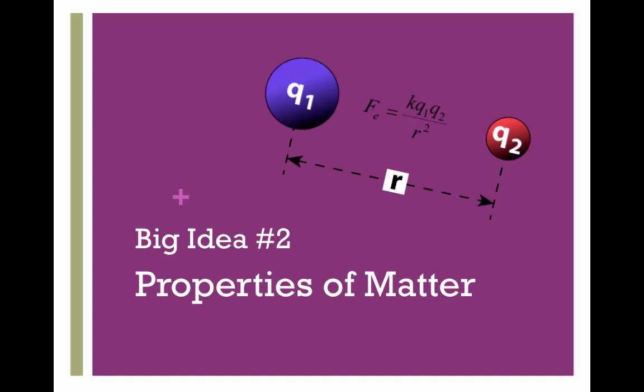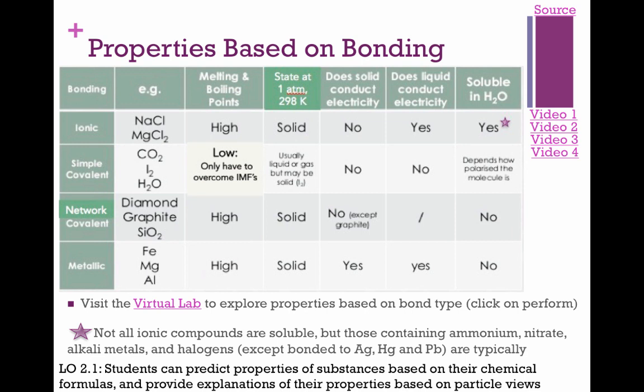For this big idea, we continue with matter, but more specifically we're going to look at bonding and phases. This will cover types of bonding like ionic and covalent, and we'll do some sample multiple choice questions on VSEPR, shapes, and hybridization. The first slide shows properties based on your types of bonding.